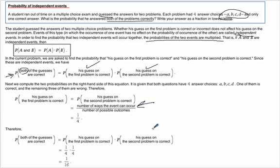And then the second time, he's going to guess one out of the four choices, so that's going to also be one-fourth.